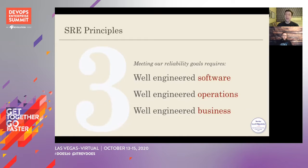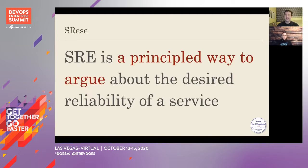The third principle is this: in order to meet our reliability goals, we need well-engineered software. But we've learned that great software isn't enough. Software alone can't make systems reliable. We need operations that are aligned around meeting our customer-oriented reliability goals, and we need business practices that empower both of these teams. Perhaps most importantly, we need all of these people to share a mission — and for that, we need to find common ground. We're going to argue, and we need to argue effectively. SRE gives us a principled way to argue about the desired reliability of a service, moving away from making decisions by shouting louder than anyone else. It's a communication framework to help make tough choices, like what are we going to promise and to whom, and how much of that good do our customers need. SRE is a language — it's a way of communicating about reliability.